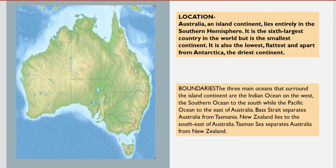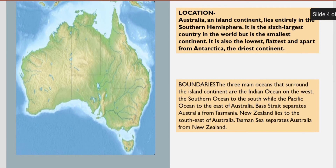Next, boundaries. The three main oceans that surround the island continent are the Indian Ocean, the Southern Ocean, and the Pacific Ocean. The Indian Ocean lies to the west, the Southern Ocean to the south, and the Pacific Ocean to the east of Australia. Bass Strait separates Australia from Tasmania, and the Tasman Sea separates Australia from New Zealand.